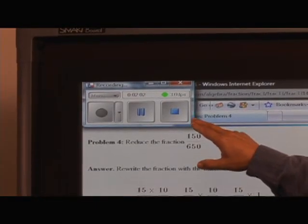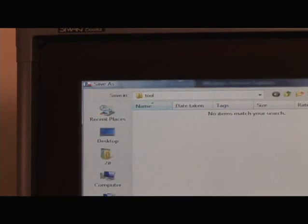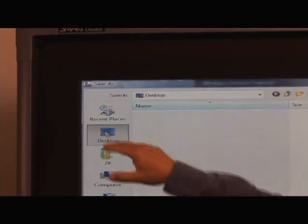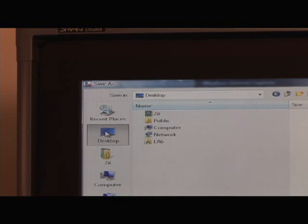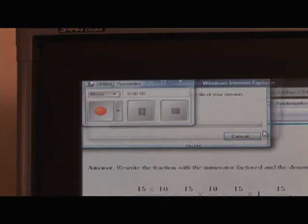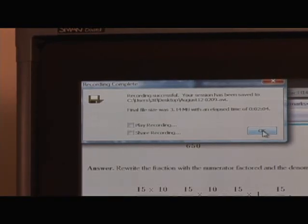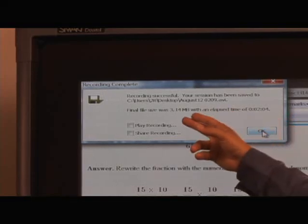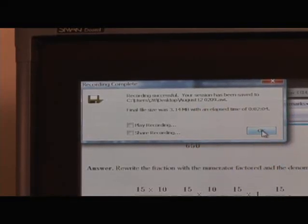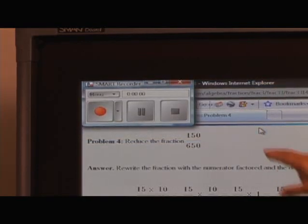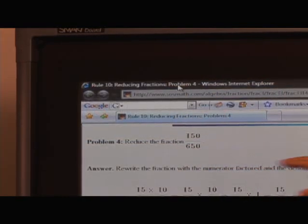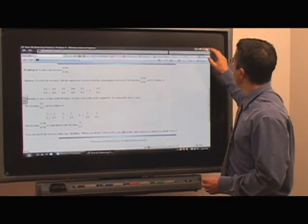And I'm going to go to the Desktop, and I will click Save. And we can tell that this 2-minute video is 3.14 megs, so about 3 megs. I'm going to click OK, and close the recorder. I'm also going to close Internet Explorer.